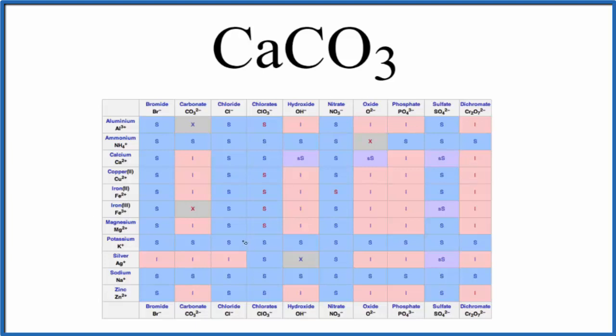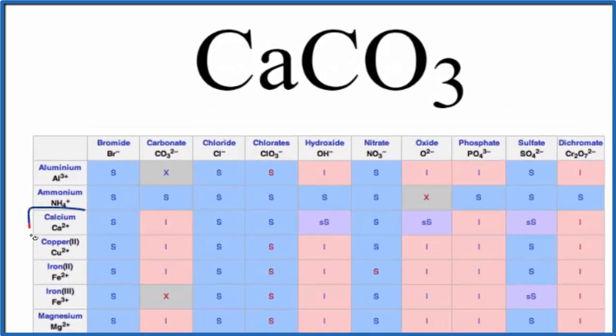We can look calcium carbonate up on the solubility table as well. We can find calcium right here, and here's the carbonate. So we go over and down, and that tells us that calcium carbonate, the regular chalk we use in the classroom on blackboards, is insoluble.